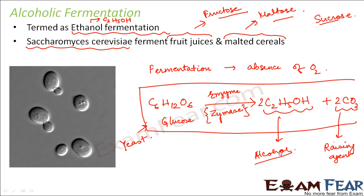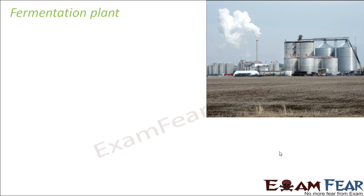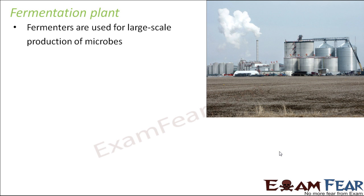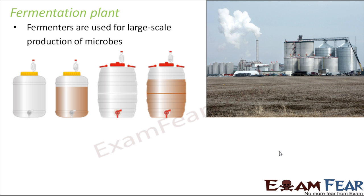Alcoholic fermentation also takes place on a commercial scale. To commercially produce large quantities of alcohol, fermentation plants have been set up. In the picture, you can see how a fermentation plant looks. Fermenters are large tank-like vessels used for large-scale production of microbes. A small amount of yeast will not produce a lot of alcohol — the greater the amount of alcohol desired, the greater the amount of yeast needed. These fermenters grow large amounts of microbes, which then convert sugars into alcohol.